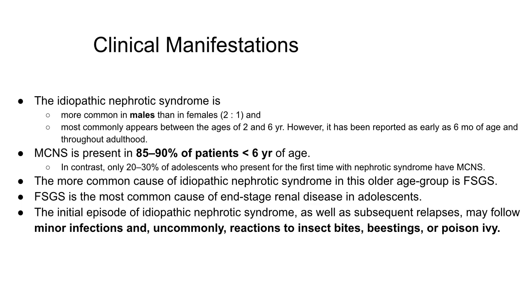Idiopathic nephrotic syndrome is more common in males with a ratio of 2 to 1 and most commonly appears between the ages of 2 and 6 years, though it has been reported as early as 6 months of age and throughout adulthood. Minimal change nephrotic syndrome is present in 85 to 90% of patients less than 6 years of age, whereas only 20 to 30% of adolescents presenting for the first time with nephrotic syndrome have minimal change disease. FSGS is more common in older age groups and is the most common cause of end-stage renal disease in adults.